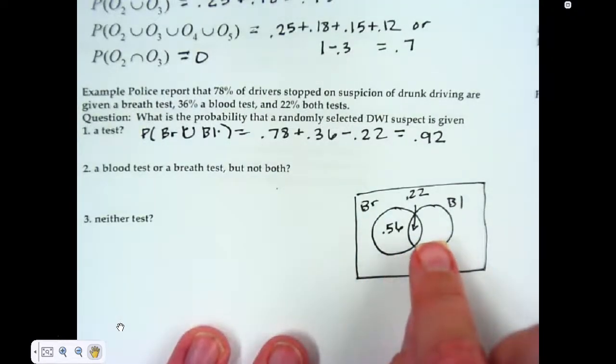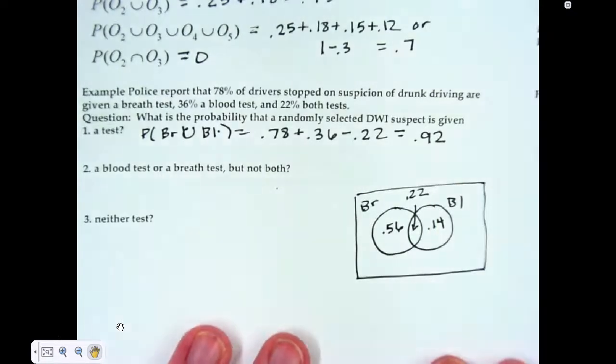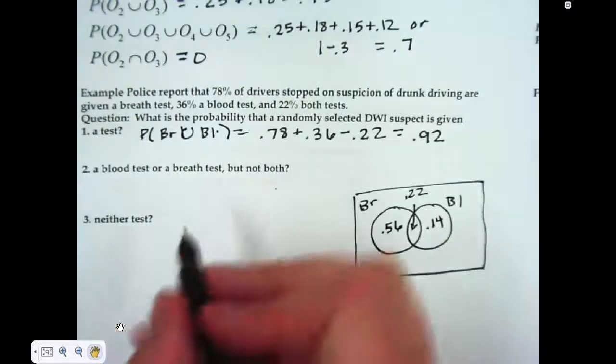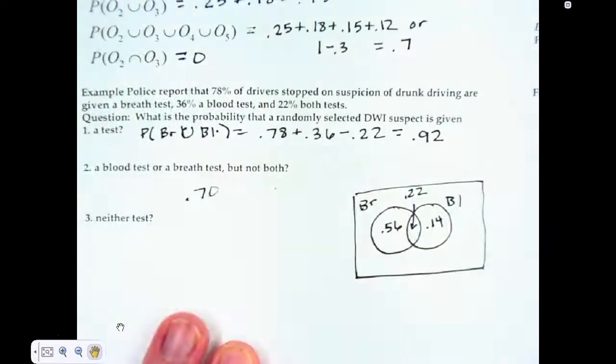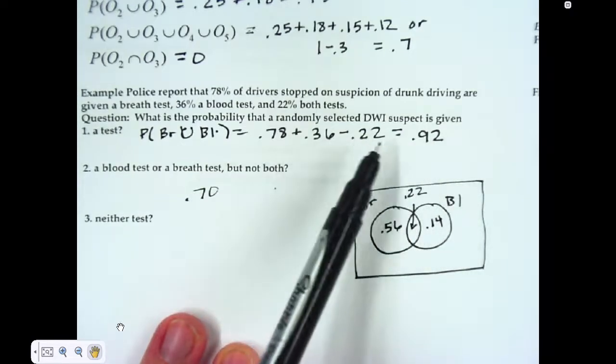For that 36% minus the 22%, right in here would be 0.14. So the probability of one or the other but not both, I can take the 0.56 plus the 0.14. I get 0.7. I would have gotten the same answer had I taken the probability of one or the other and re-subtracted the 0.22.